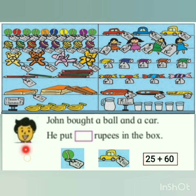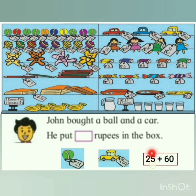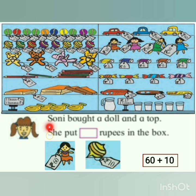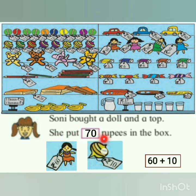Here comes the first customer, John. John bought a ball and a car. A ball costs 25 rupees and a car costs 60 rupees. Let's start with the greater number and add in tens first. So 60 plus 20 is 80, then add units 5: 80 plus 5 is 85. We put 85 rupees in the box. Next is Soni. Soni bought a doll and a top. A doll costs 60 rupees and a top costs 10 rupees. So 60 plus 10 is 70. She put 70 rupees in the box.